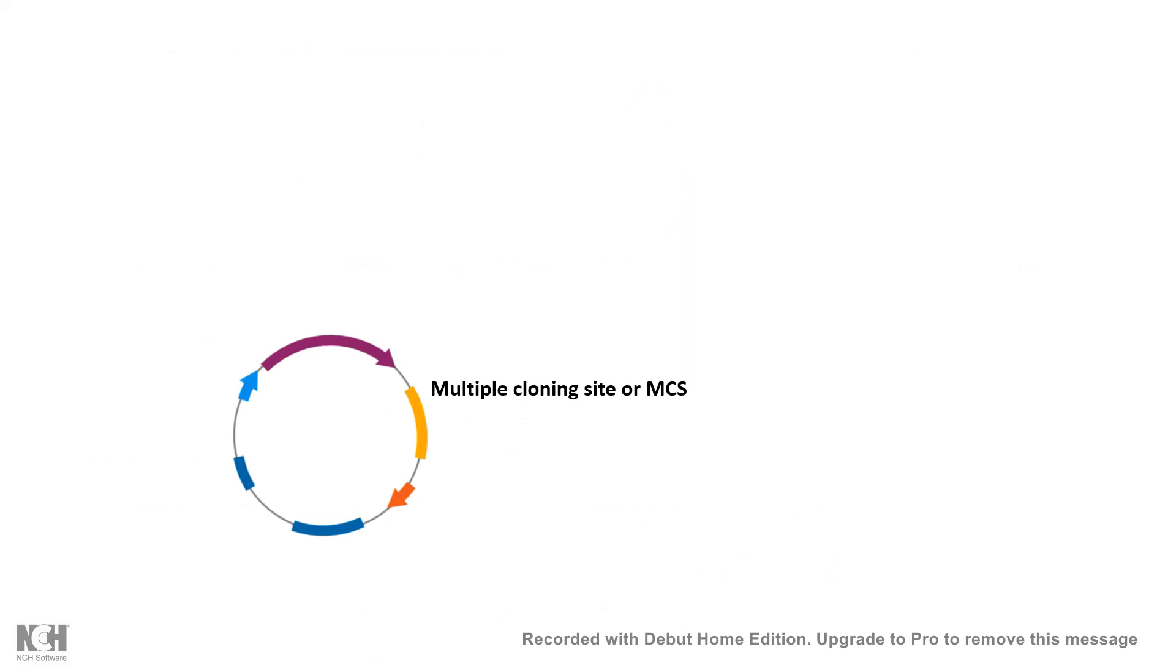So the first feature, which is not unique, is the multiple cloning site which should be a feature of every cloning vector. This is where you clone your gene of interest.